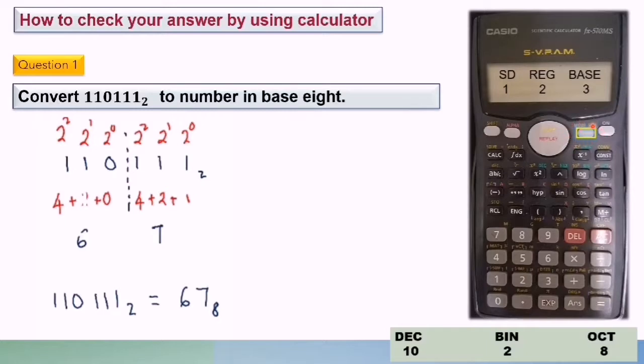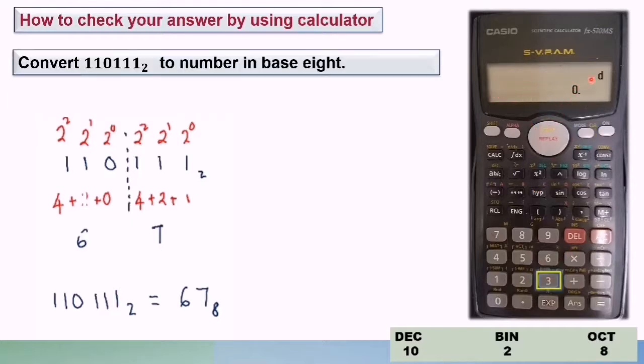First you press mode button until you see the screen like this. Next you choose 3. When you press button 3 this screen will appear. From the question you need to convert the number in base 2 to number in base 8. So we don't want decimal. So now you press binary because binary is for base 2. So you press it. You will see the letter B. After you see the letter B only you can key in the number 110111 into the calculator and press equals.